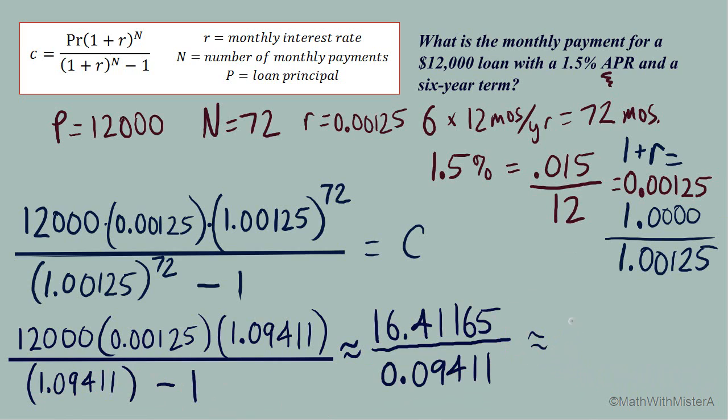And this gives a result that is about, remember we're talking about dollars and cents here a monthly payment, so I'm going to round and look at $174 and when I round it's going to be 39 cents. So that's our monthly payment on a $12,000 loan with this 1.5% APR and it's a six year loan.